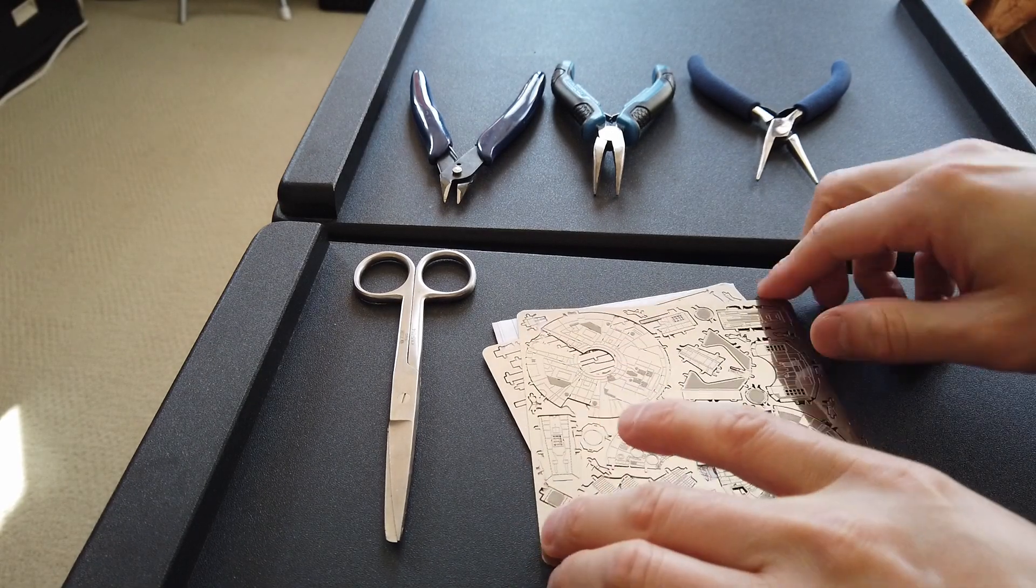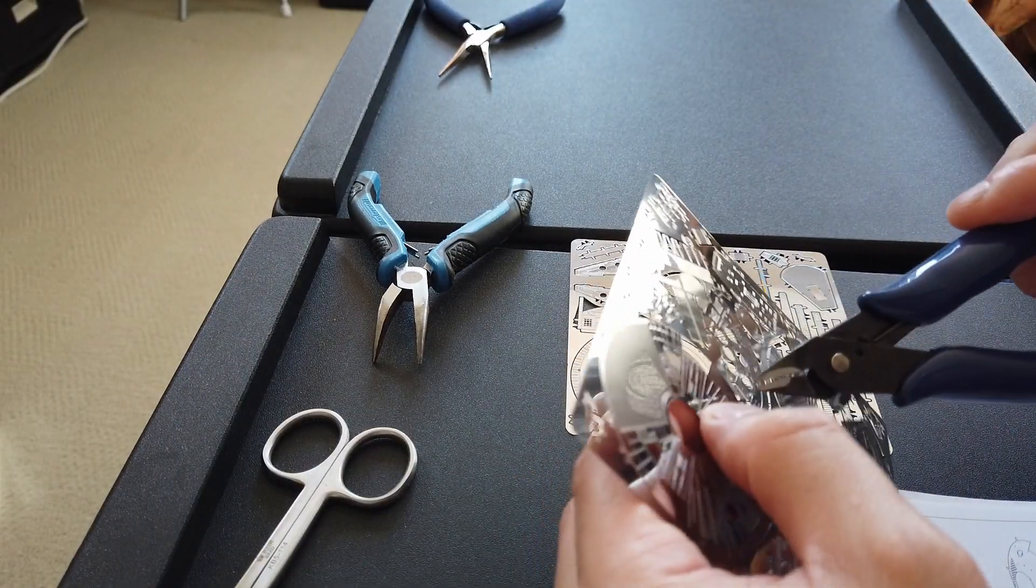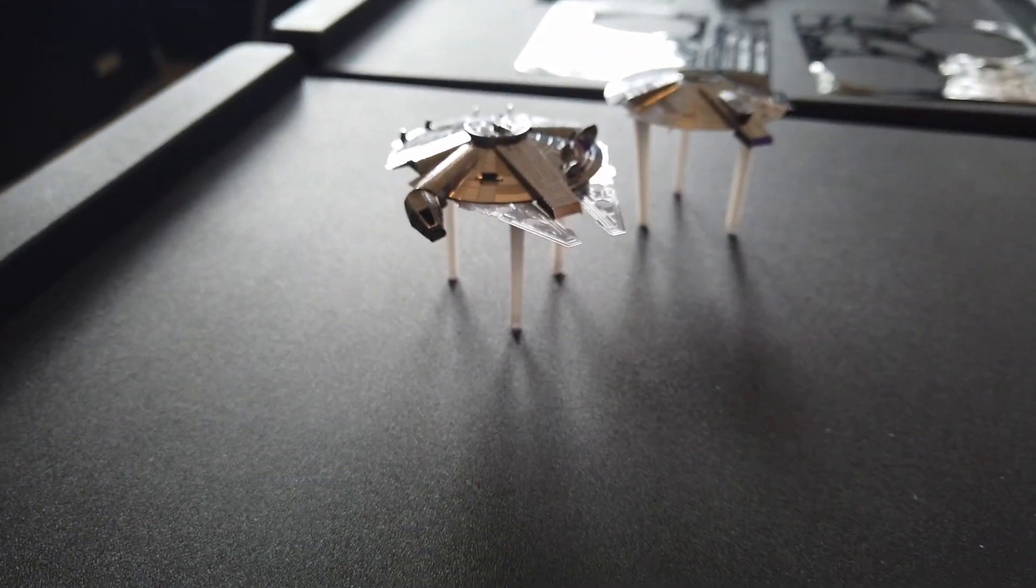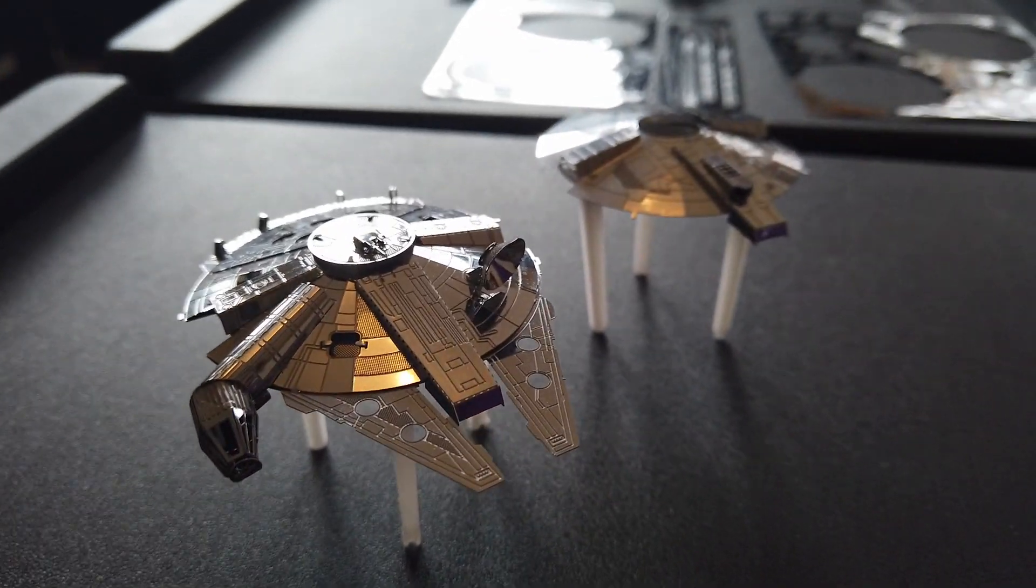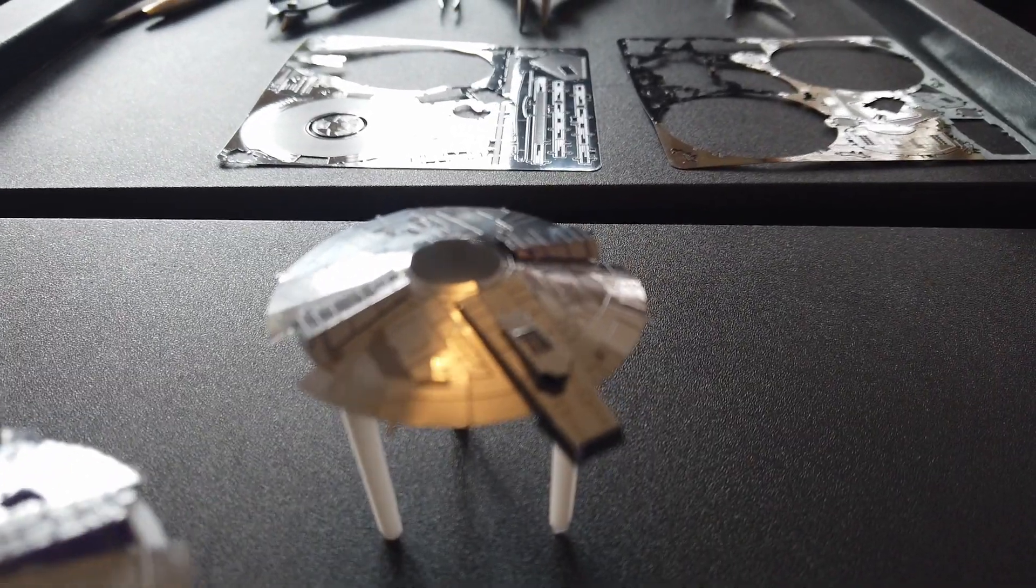I won't be showing how to make the model here as the instructions are pretty straightforward and different models will be assembled differently, but do be careful as the edges are sharp. There are many different models available, from cars to planes, famous buildings to Star Trek and Star Wars, so find your favorite one and make it into a unique fridge magnet.